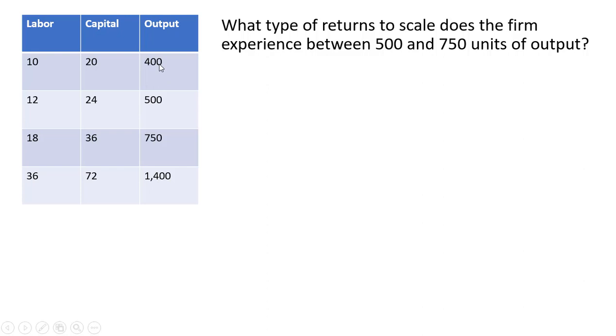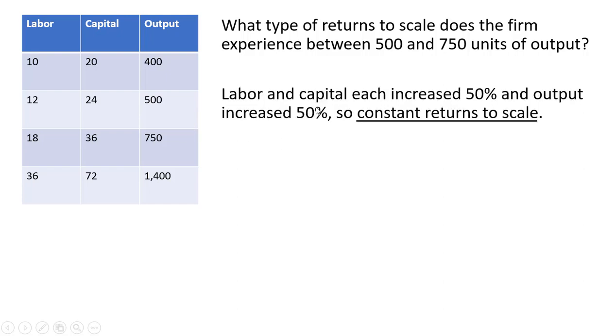The next thing we want to look at in this table is what type of returns to scale does the firm experience between 500 and 750 units of output. I'm going to show that labor and capital, in this case, each increased 50% and output also increased 50%. So this would be constant returns to scale.